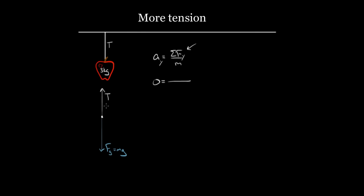Tension is vertical, so I put tension into the net force expression. I'm going to call upward positive, so tension is positive. Mg points down, so I do minus mg, and I divide by the mass. Now I just solve for the tension. Multiply both sides by m — I still get zero on the left-hand side — so zero equals T minus mg. If I solve for T, I get that the tension is equal to mg.